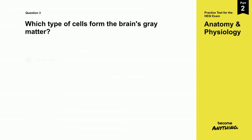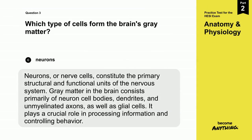The correct answer is C. Neurons. Neurons, or nerve cells, constitute the primary structural and functional units of the nervous system. Gray matter in the brain consists primarily of neuron cell bodies, dendrites, and unmyelinated axons, as well as glial cells. It plays a crucial role in processing information and controlling behavior.